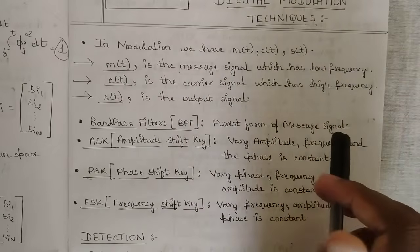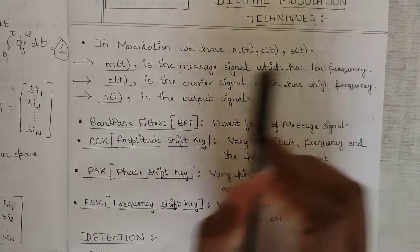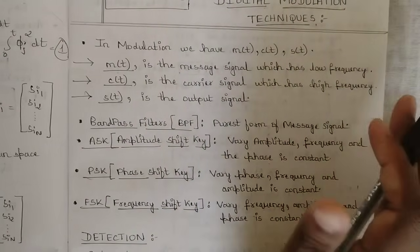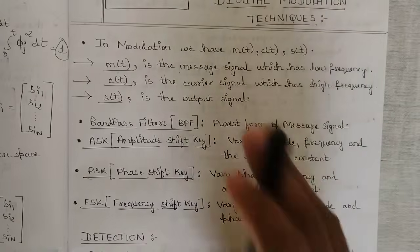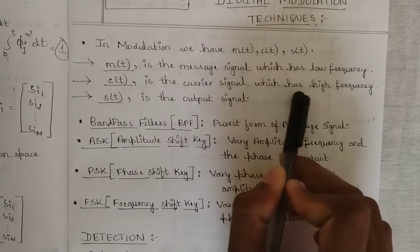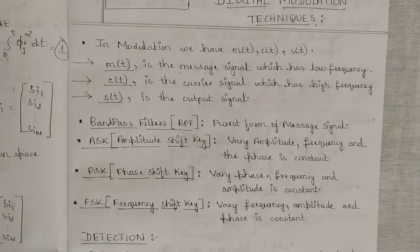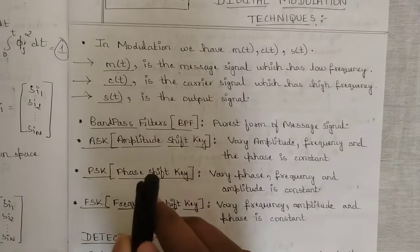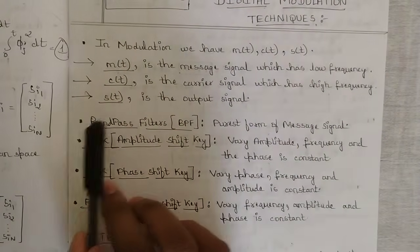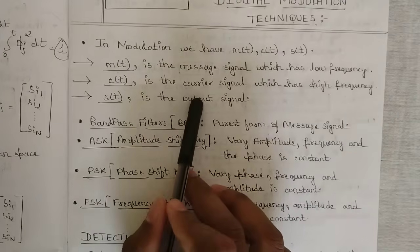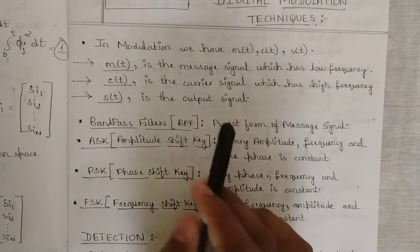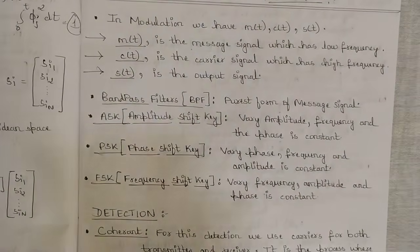M(t), the message signal, carries low-frequency, periodic signals. C(t), the carrier signal, consists of high-frequency, periodic signals with frequencies ranging from 20 Hz to 20 kHz. Based on the variation observed in the carrier signal, we obtain the final output, also called the modulated signal.